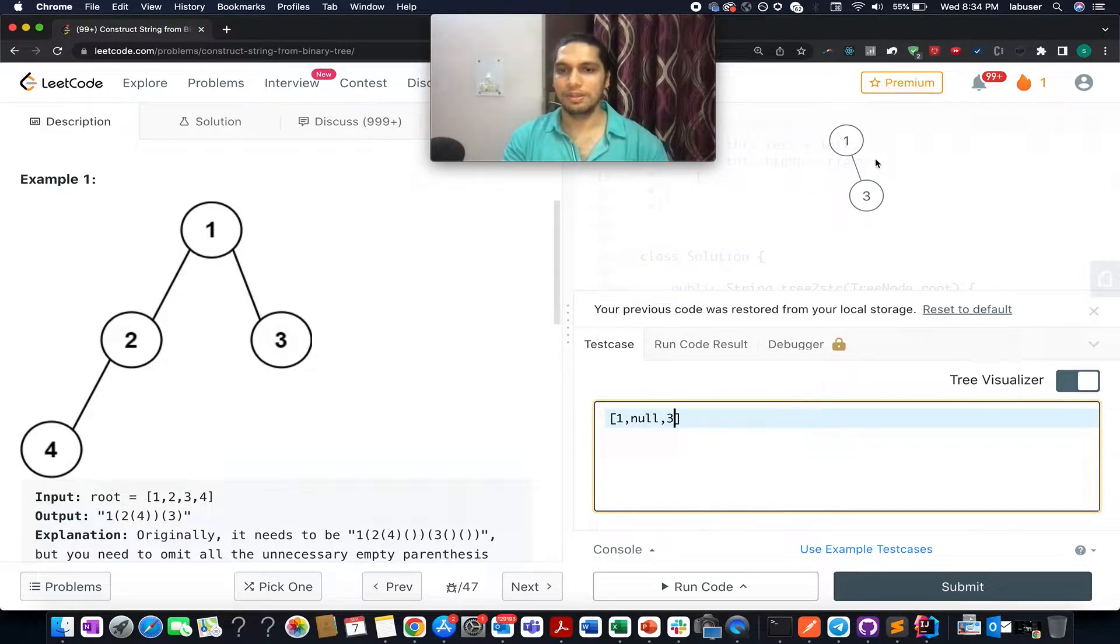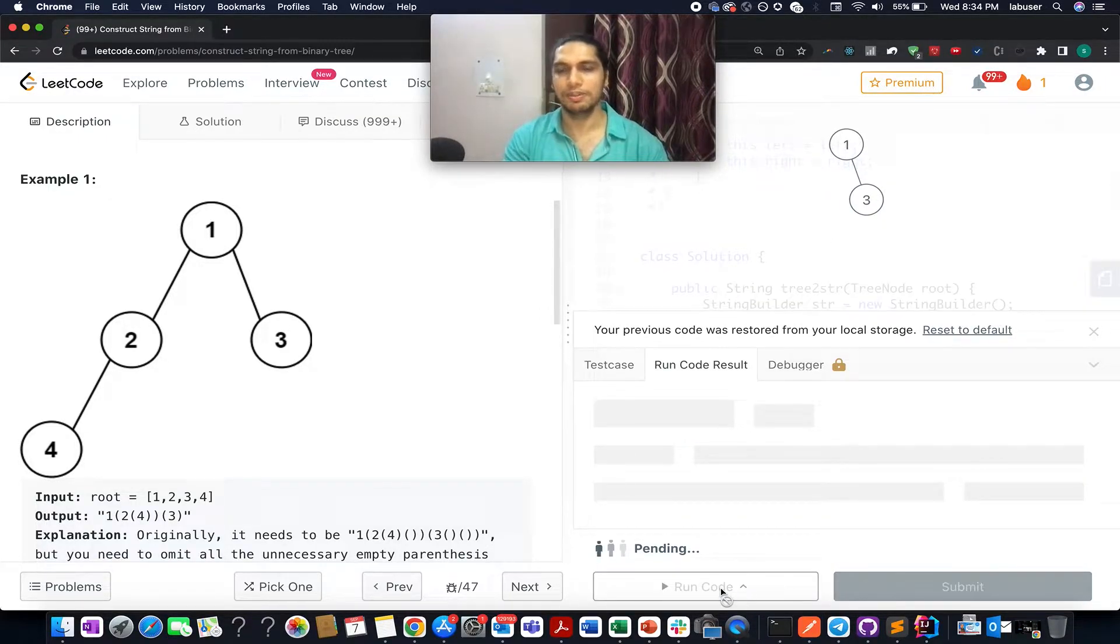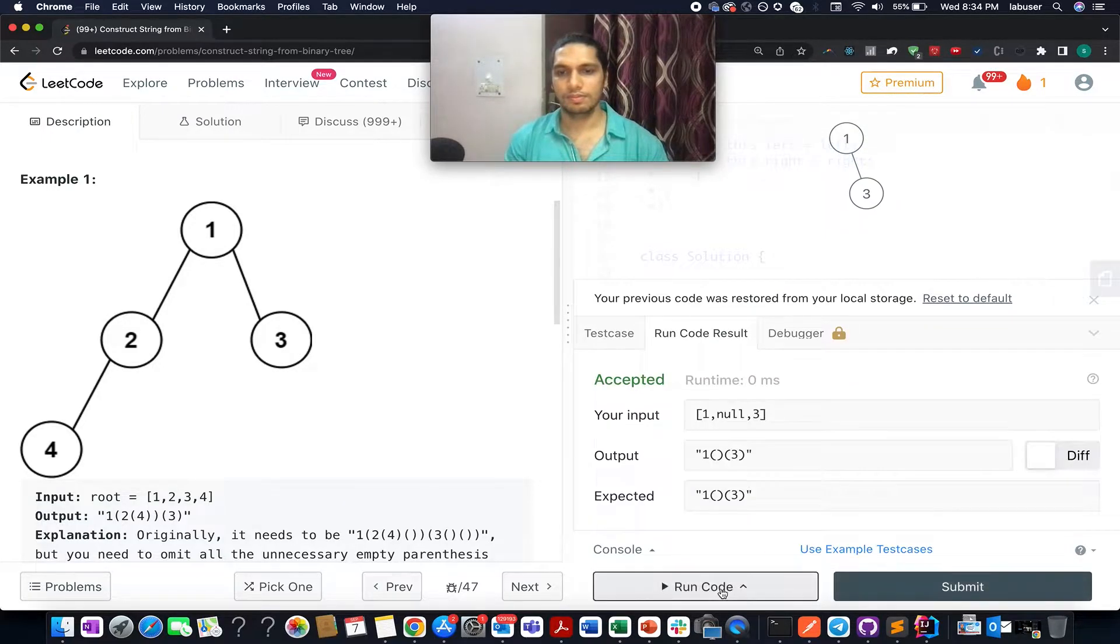This is the tree and its output turns out to be something like this. The null value is absolutely ignored over here. We have the output as 1 bracket followed by 3 closing bracket. Let's walk through another test case. We have the elements as 1, null followed by 3.